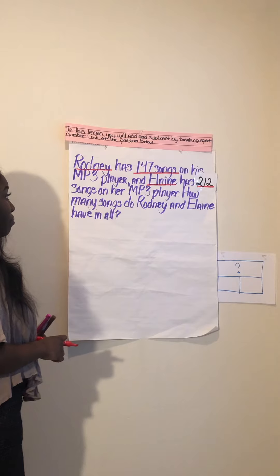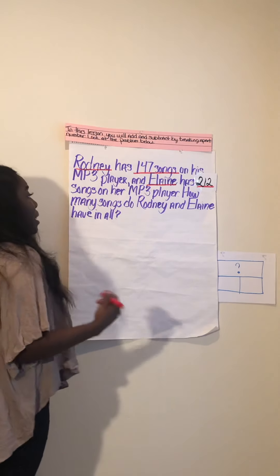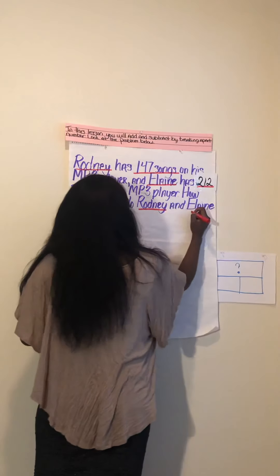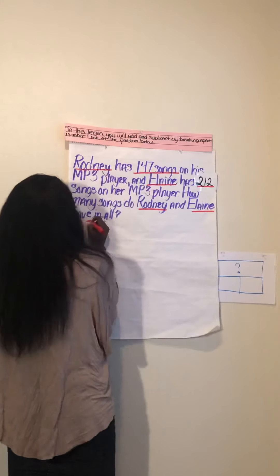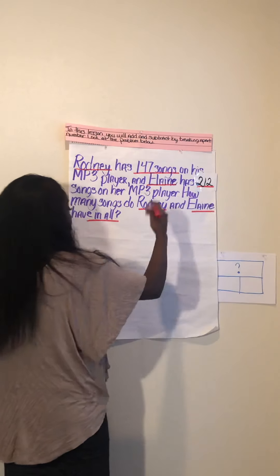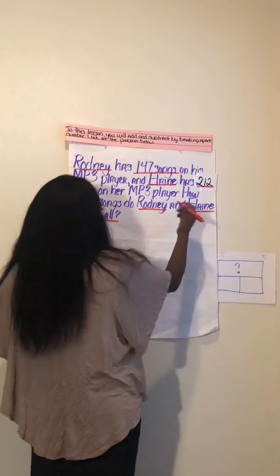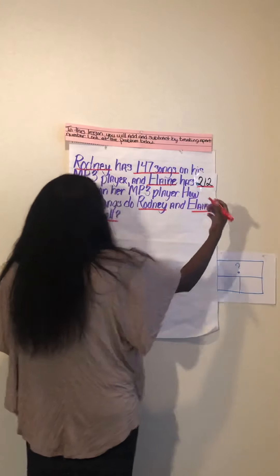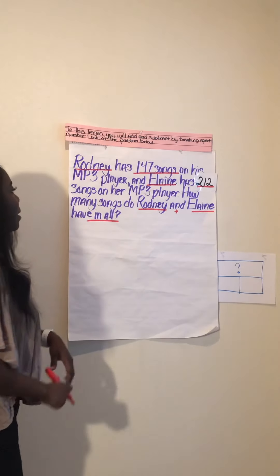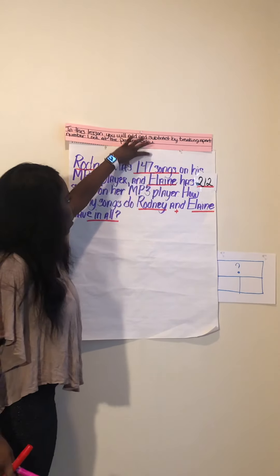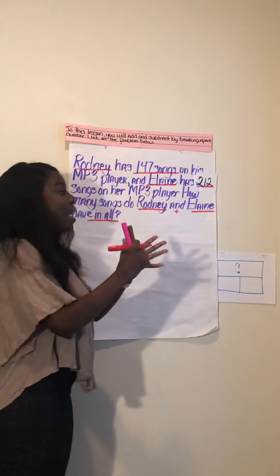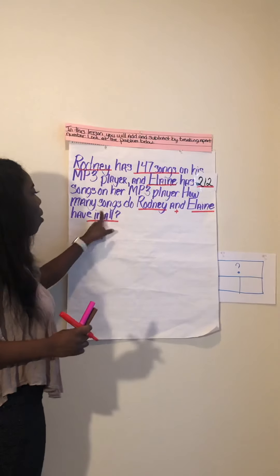But now let's look at the question: how many songs do Rodney and Elaine have in all? What I like to do with the word 'and' is to go ahead and add a plus sign, because what it's telling me is I need to add Rodney's 147 and Elaine's 212 together to find out how many in all.